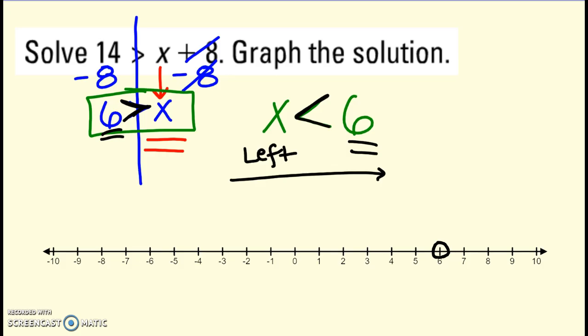So it doesn't include 6, but anything smaller than 6 would work. So open circle, arrow to the left.